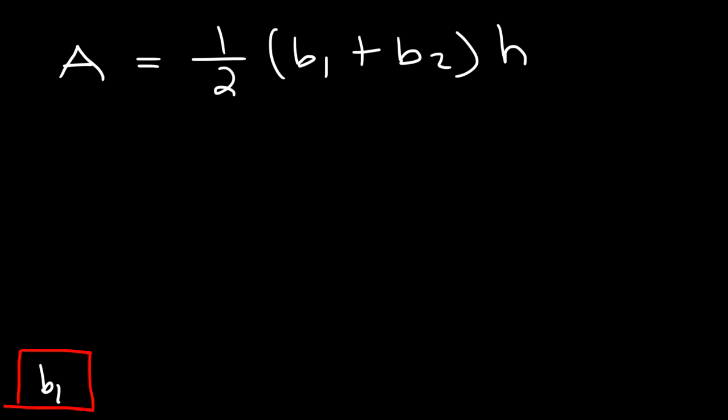In order to solve for a variable we need to get that variable on one side of the equation — it could be on the left side or on the right side. I want to keep B1 on the right side, so everything else I need to move to the left side. Let's start with the 1/2. To get rid of the fraction I need to multiply by the denominator, which is 2.